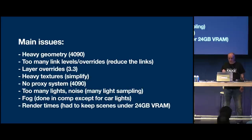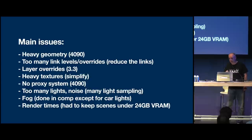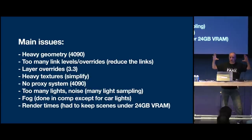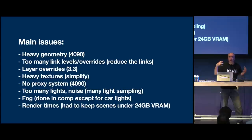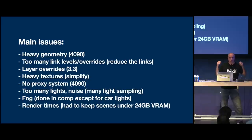Layer overrides were fixed with 3.3. Heavy textures were another issue — Cycles doesn't have MIP mapping. MIP mapping is when you have one file containing an 8K texture along with 4K, 2K, 1K, 512, down to 32 by 32. At render time the renderer decides this object is far away and loads only the 512, saving a lot of memory. Every other renderer on the planet has it, but Cycles doesn't. They're working on it, but we didn't have it at the time. The only thing we could do was use Simplify to reduce textures.